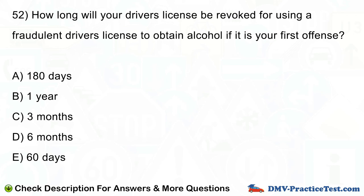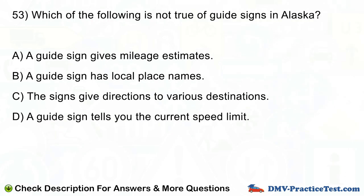Question number 53. Which of the following is not true of guide signs in Alaska? A. A guide sign gives mileage estimates. B. A guide sign has local place names. C. The signs give directions to various destinations. D. A guide sign tells you the current speed limit.